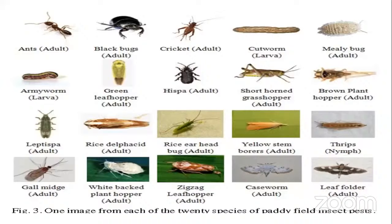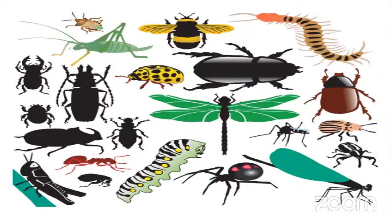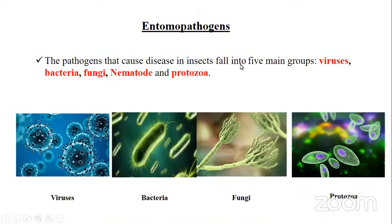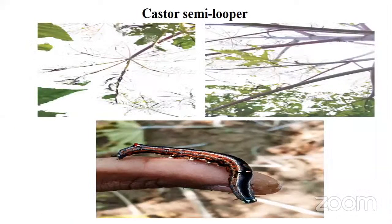These pests can damage entire plants — leaves, stem, and fruits. This is a serious problem in crop protection. The picture I took from a castor field at Grampardy area shows castor fields highly damaged, with leaves eaten by the castor semi-looper. This is highly damaging.